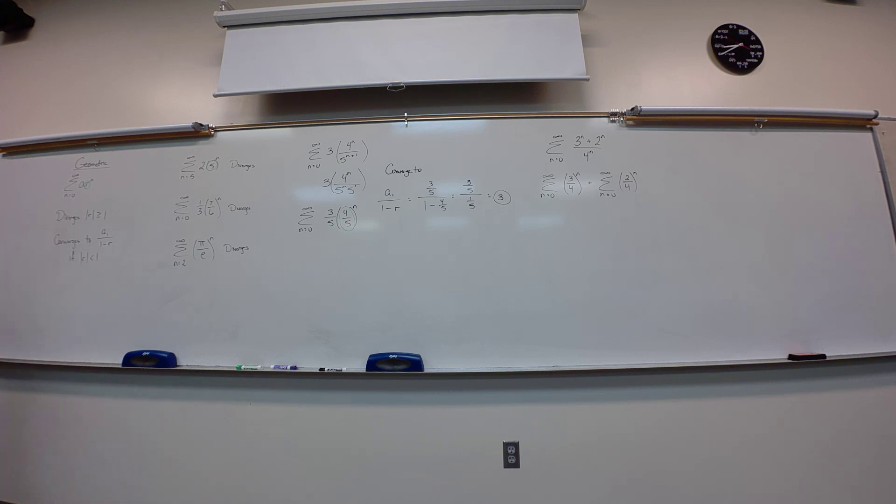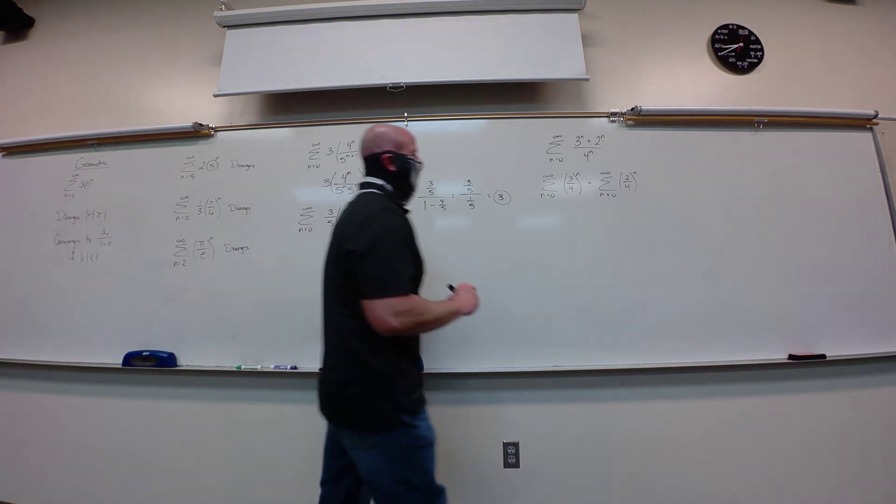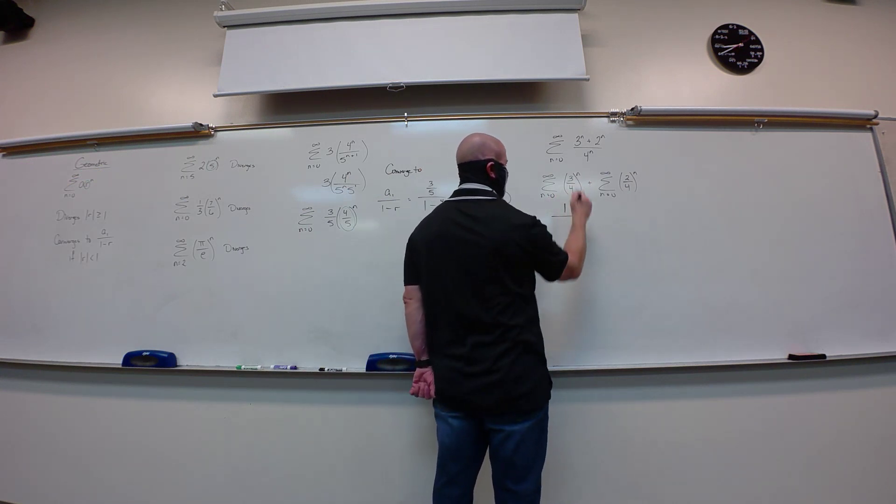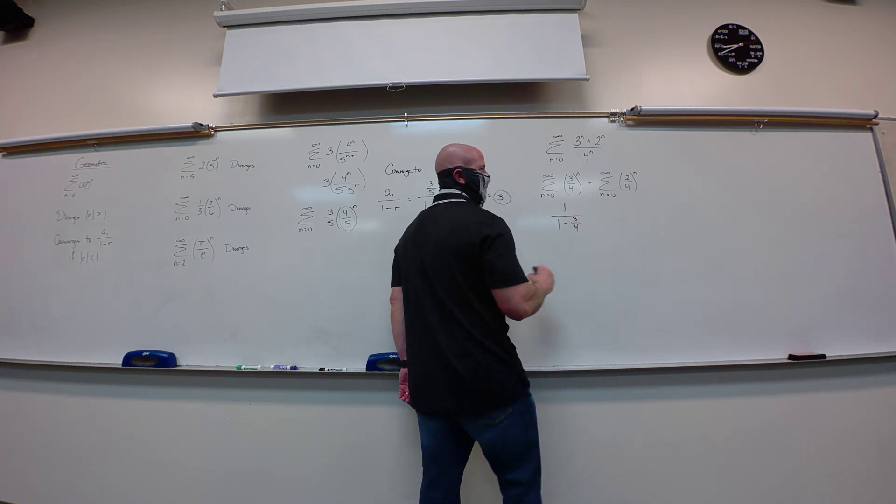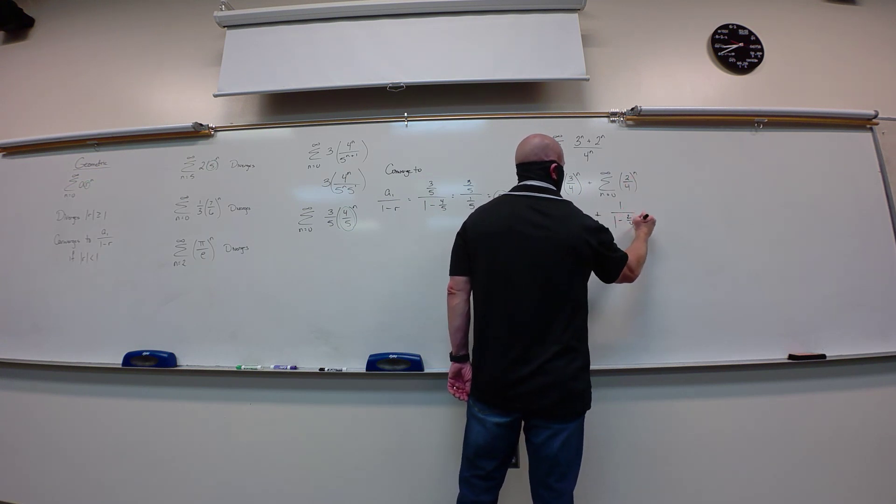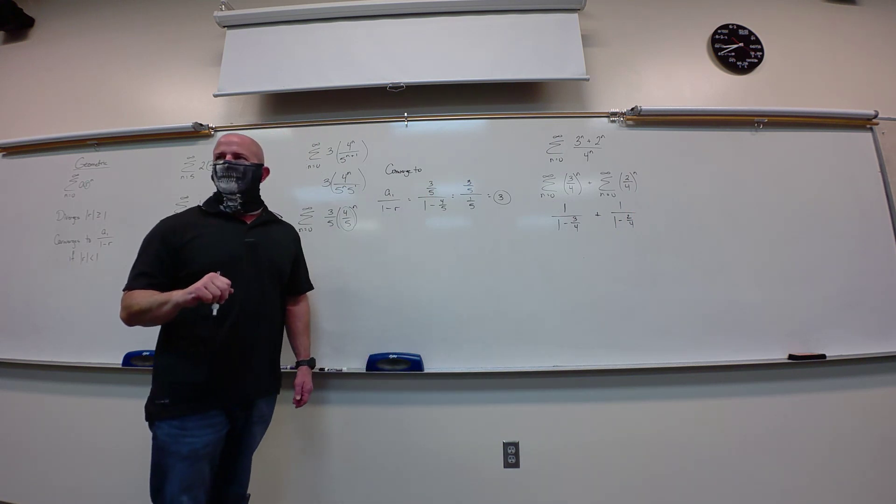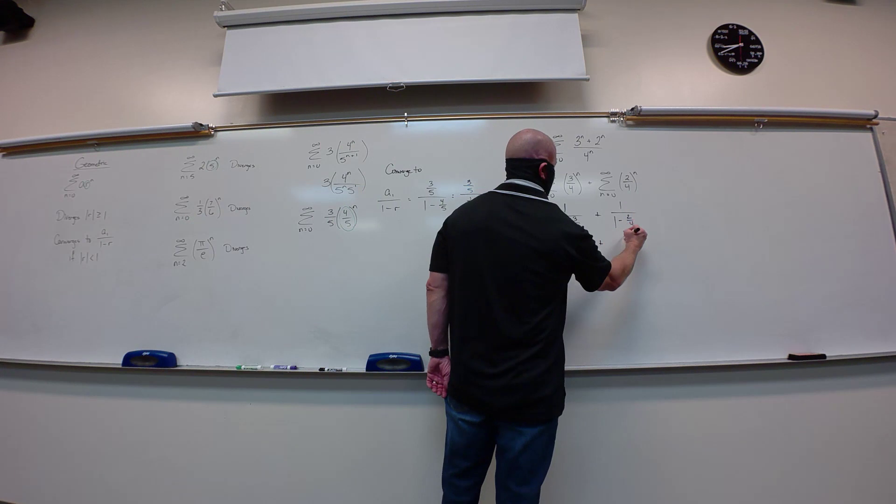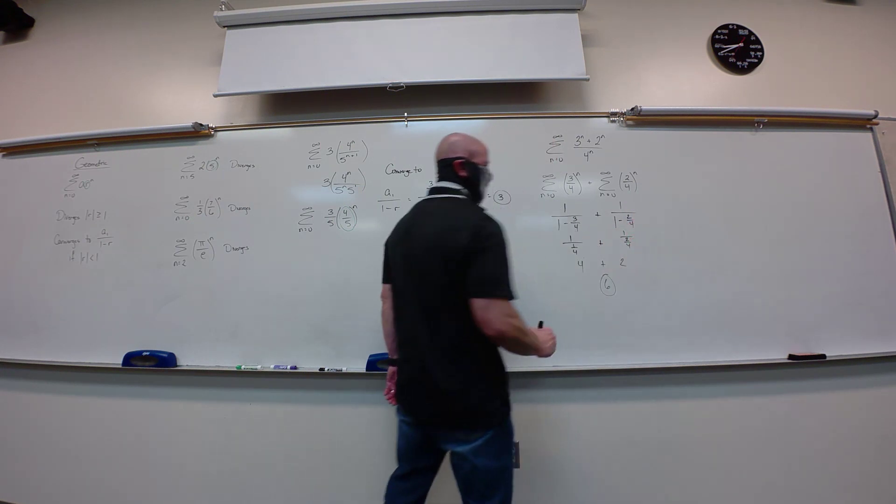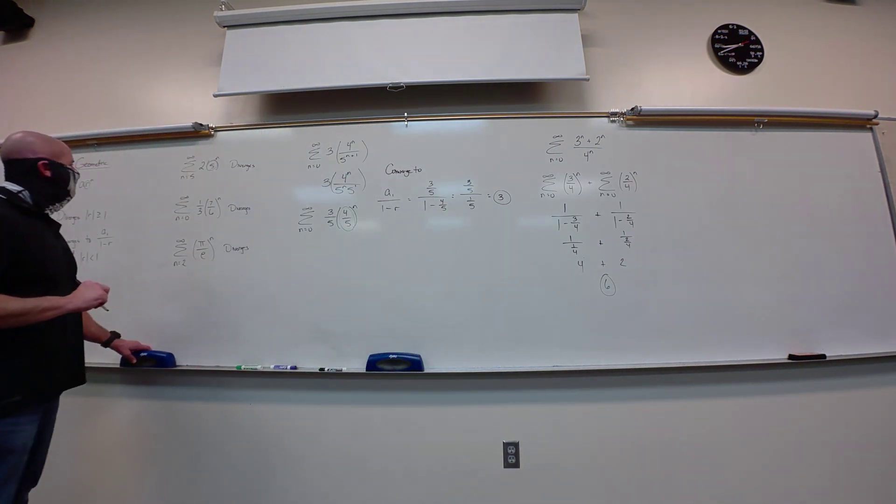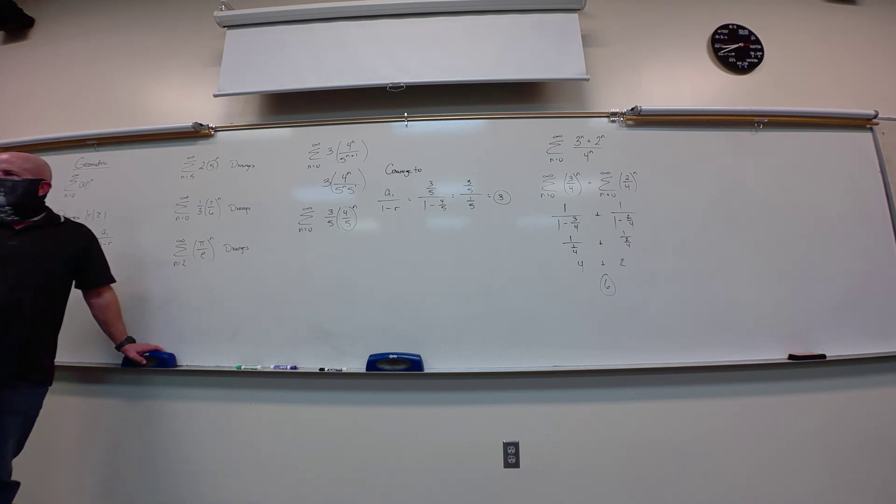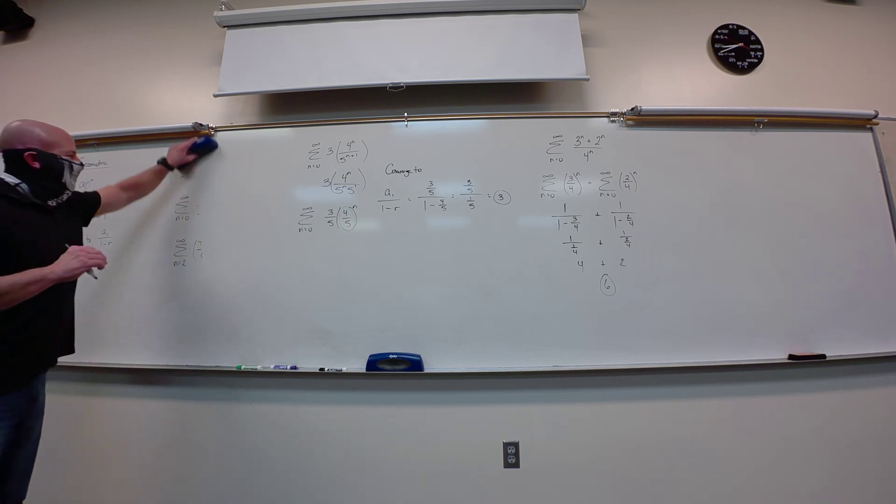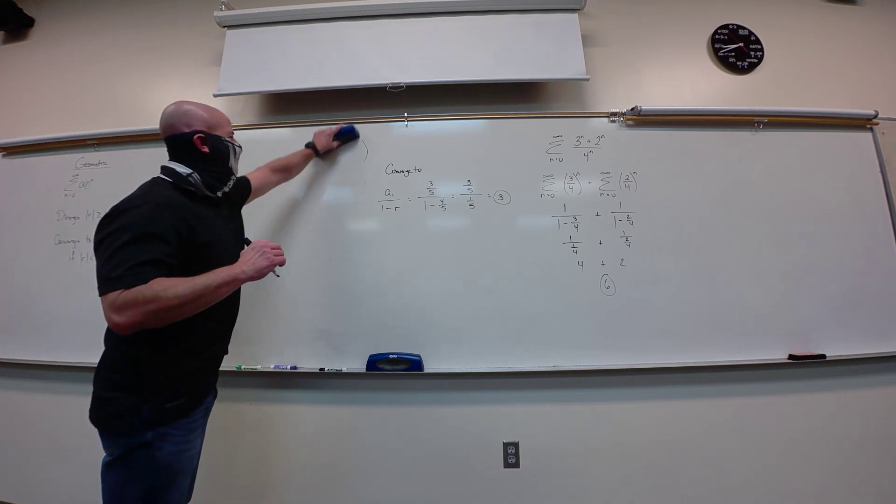So this one will converge. I'm looking right at this R value. This is going to tell me that it's going to converge. That's less than one. So it will converge to a sub one over one minus R. Four-fifths is the R value. Then I go for my first term. Remember, first term is the first one in the sequence, wherever you're starting. So in this case, I'm starting with n equals zero. First term is where I'm substituting zero in this time. So what's four-fifths to the zero? One times three-fifths is just three-fifths.